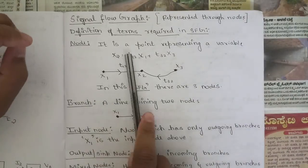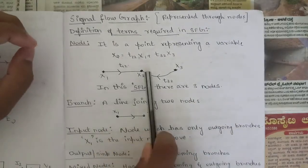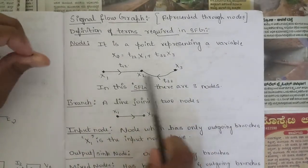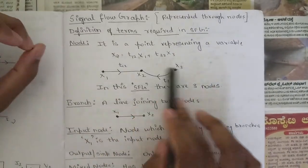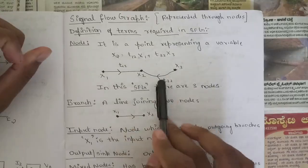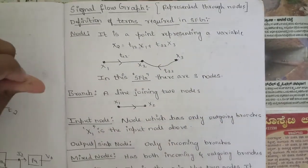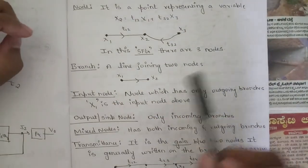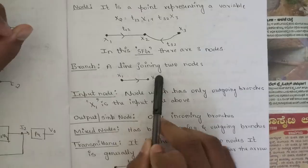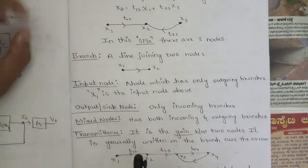The first term is node — it is a point representing a variable. In this simple signal flow graph, x1, x2, x3 are nodes, and t12 and t32 are the directions. The next thing to know is branch — a branch is a line joining two nodes. For example, joining nodes x1 and x2 forms a branch.